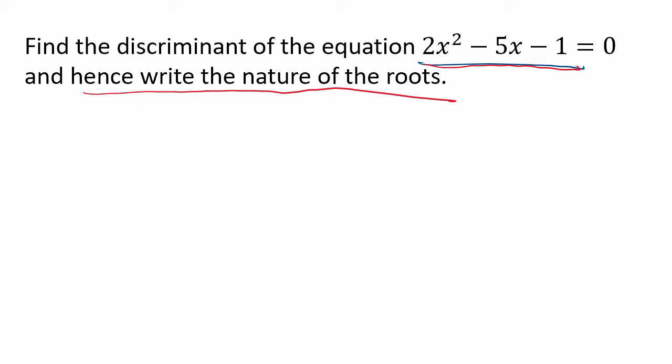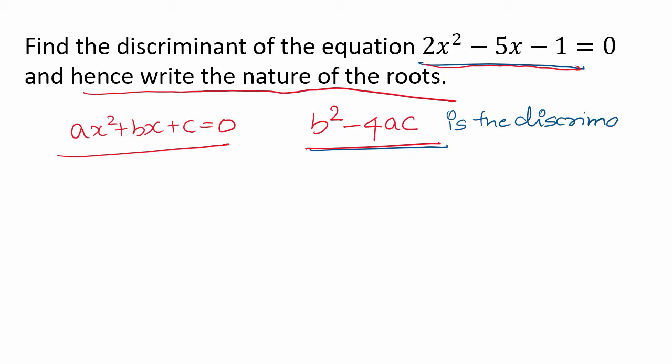Discriminant is what we need to know. What is the discriminant of an equation? If the equation is ax² + bx + c = 0, the discriminant is defined as b² - 4ac. For a quadratic equation ax² + bx + c = 0, b² - 4ac is the discriminant. If you don't know this, you cannot solve it.